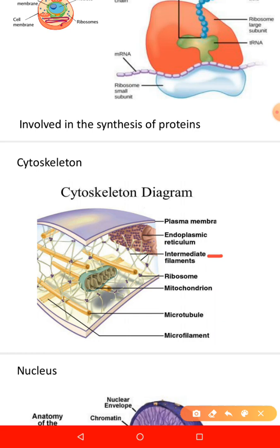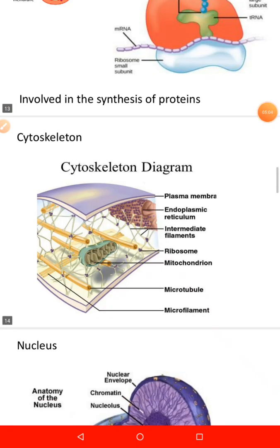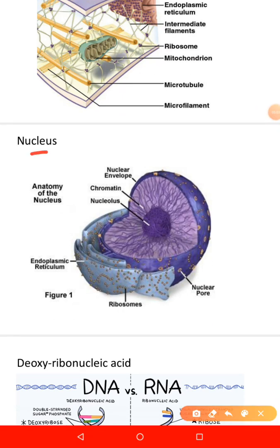Intermediate filaments are structures of the cytoskeleton that form a network around the nucleus and extend to the periphery of the cell. They help to maintain the shape of the cell and connect adjacent cells through desmosomes, providing structural integrity to the cell.